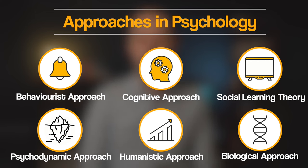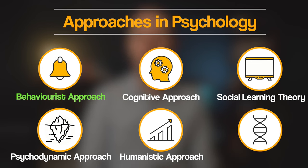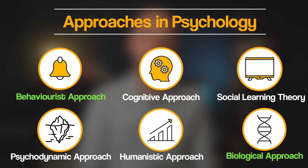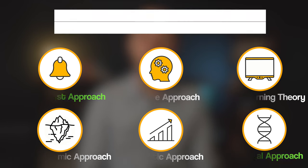Each of these approaches explains human behaviour from a different perspective. They tend to emphasise particular ideas and explanations that differ from one another. For example, behaviourists put the focus on the role of the environment on human behaviour, whereas the biological approach puts the emphasis on internal biological factors such as genetics and neurotransmitter levels. Understanding these main approaches gives you a good foundation for exploring a range of other topics in psychology.